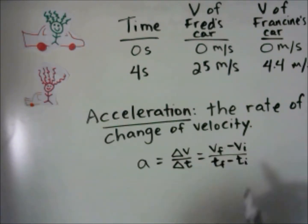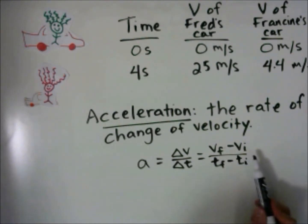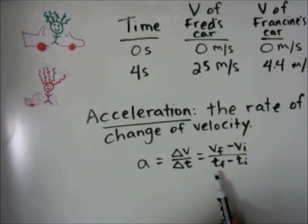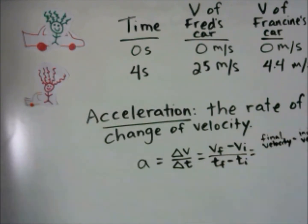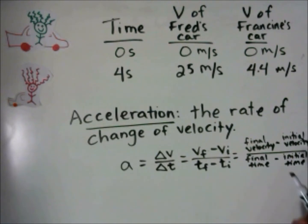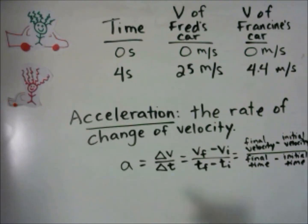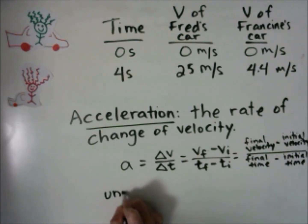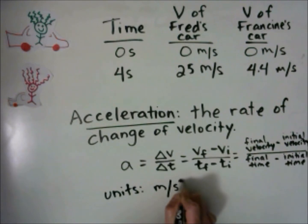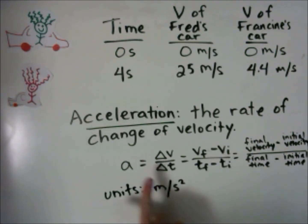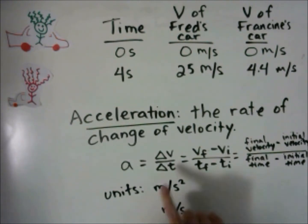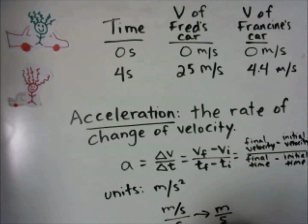So we can also write this as final velocity (V sub F) minus initial velocity (V sub I), over final time (T sub F) minus initial time (T sub I). Written out, it's final velocity minus initial velocity over final time minus initial time. We measure acceleration in the units of meters per second squared. This unit comes from the fact that we have a velocity, which is meters per second, divided by time in seconds — which can be rewritten as meters per second squared.